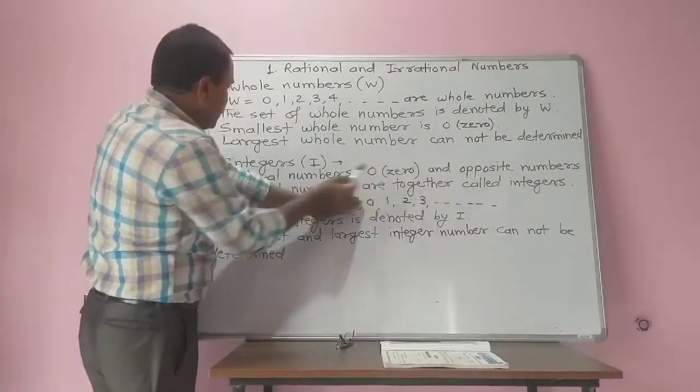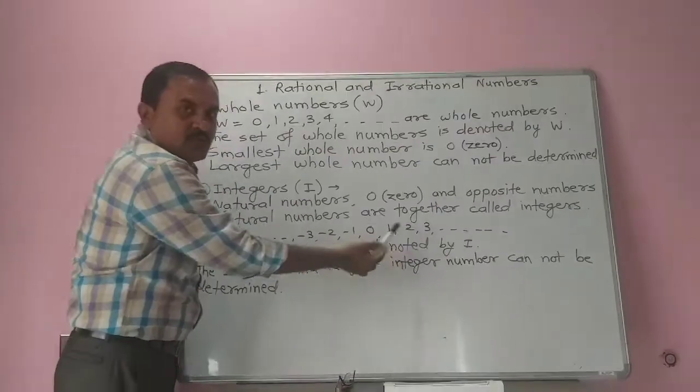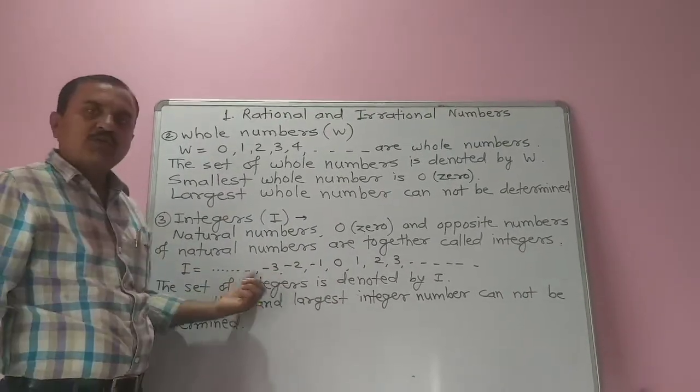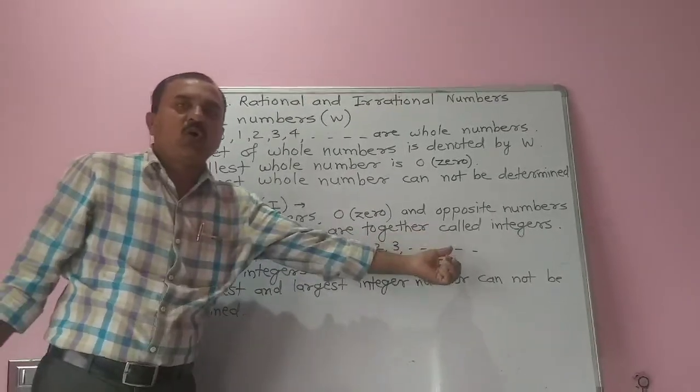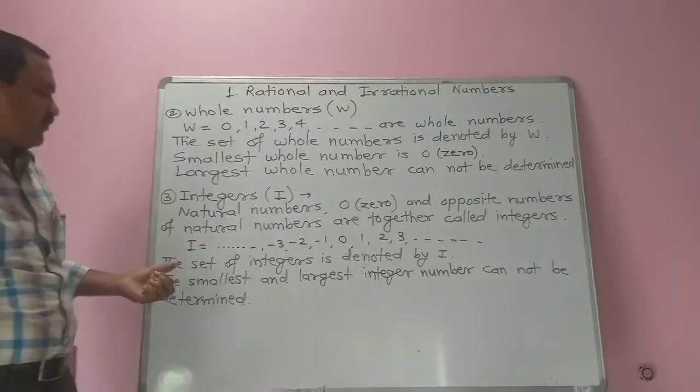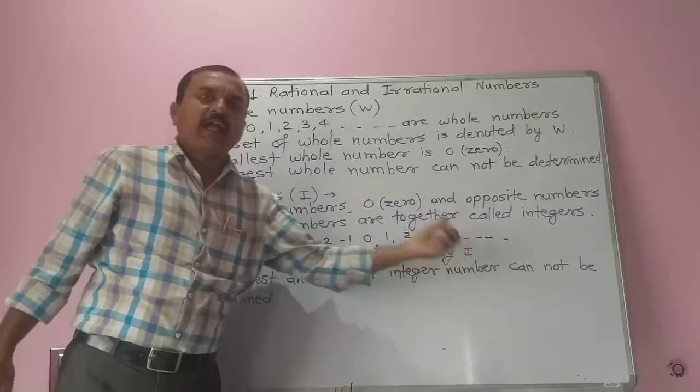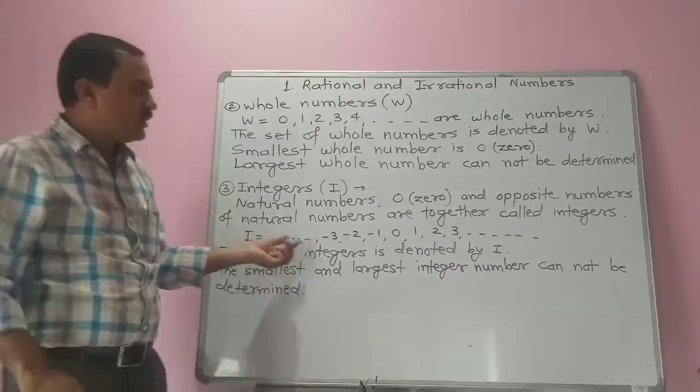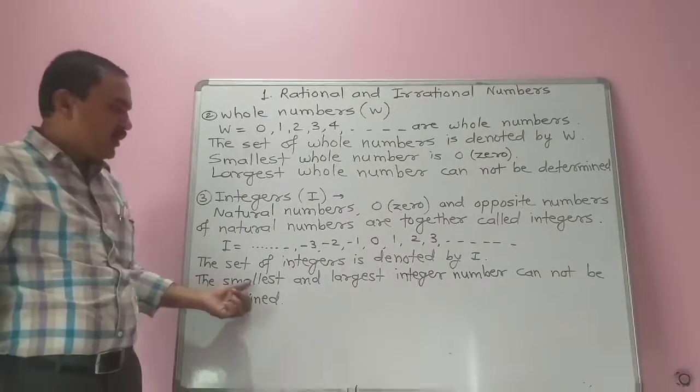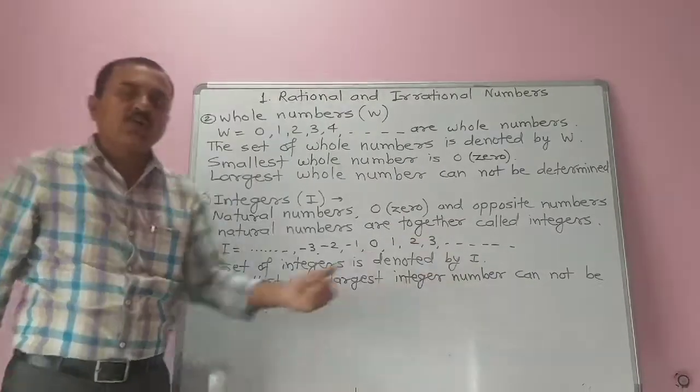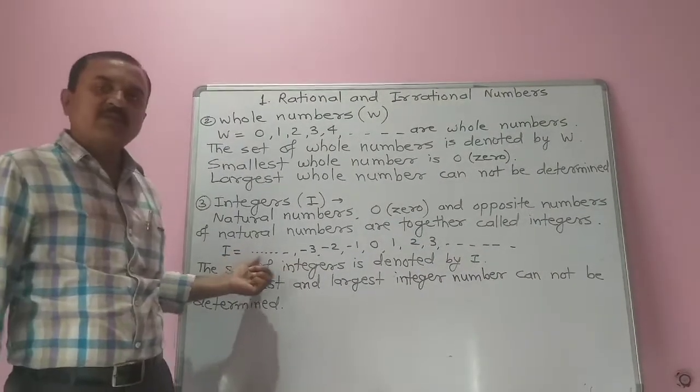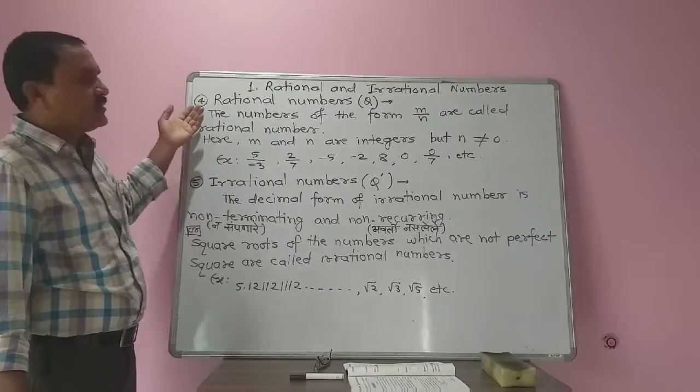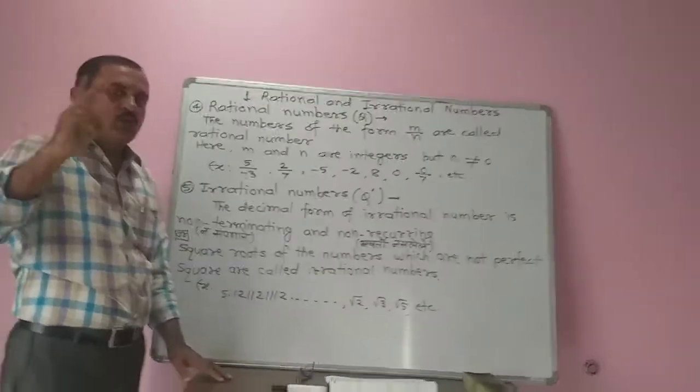And opposite numbers of natural numbers: opposite of 1 is minus 1, of 2 is minus 2, of 3 is minus 3, and so on. These opposite numbers together are called integers. The set is denoted by capital I. Now, next natural numbers, whole numbers, integers.